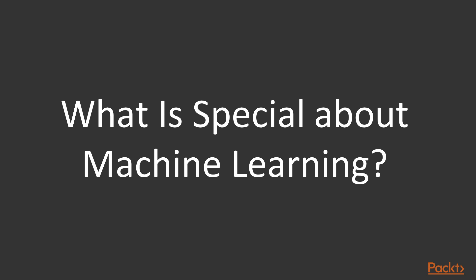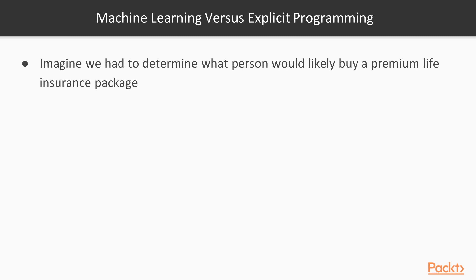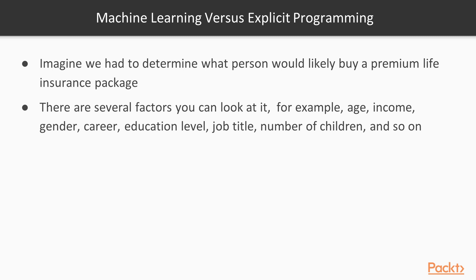But what is so special about machine learning? Think about machine learning versus explicit programming. What is explicit programming? Imagine we had to determine what person would likely buy our premium life insurance package. Now there are several factors you can look at: age, income, gender, career, education level, job title, number of children, and a lot of other data.